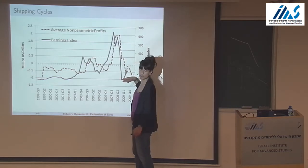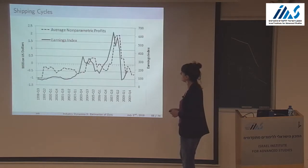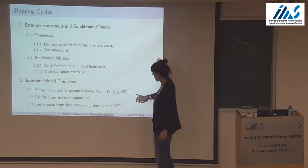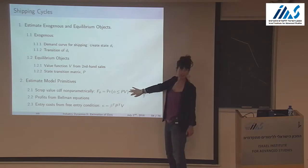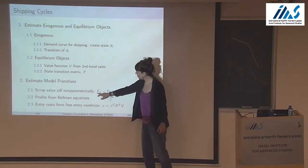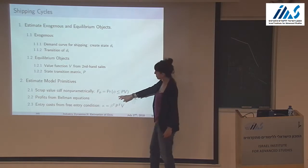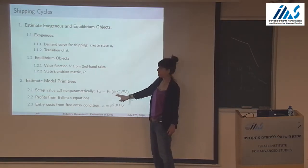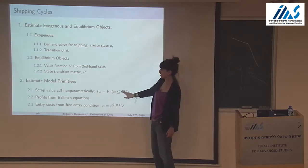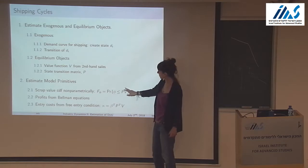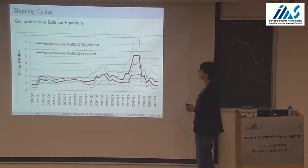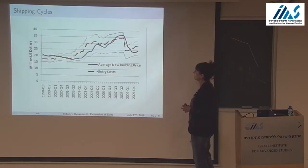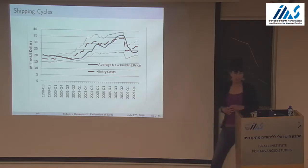This is one external validation exercise correlating the estimated profits to industry profit indices, and it tracks well. The exit step is fairly straightforward — to get the scrap value distribution, you estimate the probability that the scrap value is smaller than the expected continuation value. This is known because it comes from resale prices, and non-parametrically you can get this distribution of scrap values.